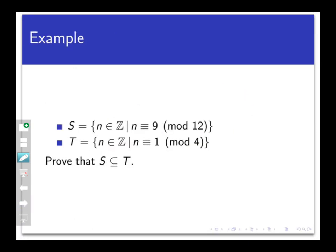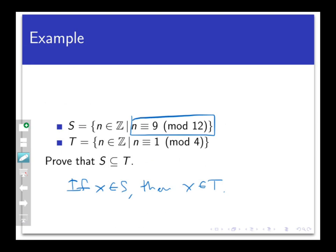Let's look at an example. Here are two sets: S is the set of all integers that are congruent to 9 mod 12, and T is the set of all integers that are congruent to 1 mod 4. What we're going to prove is that S is a subset of T. The strategy is to prove that if X belongs to S, then X belongs to T — that's the conditional statement we need for subset inclusion.